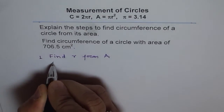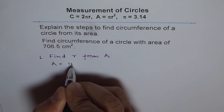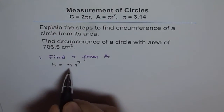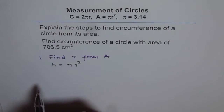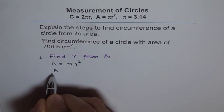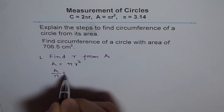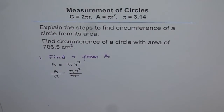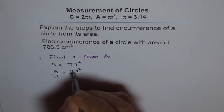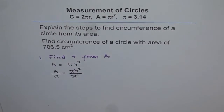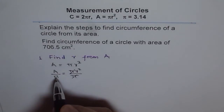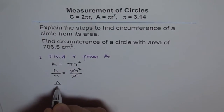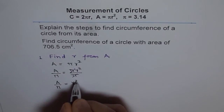We know area equals πr². Now we divide both sides by π — π and π get cancelled — and we get A over π equals r².